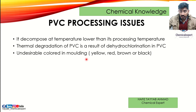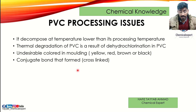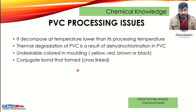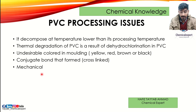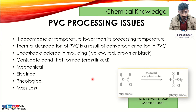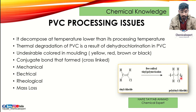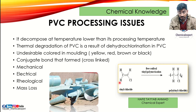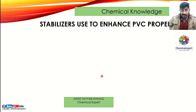Sometimes the linear chain of PVC breaks and forms a cross-link, which is a negative aspect of PVC processing. When cross-linking occurs, there are additional effects: mechanical properties also break down during this process, and sometimes electrical properties and rheological ability are also damaged. Mass loss can also occur. You can see the structure — in vinyl chloride the double bond between carbons consists of one sigma and one pi bond; sigma is stronger than pi.